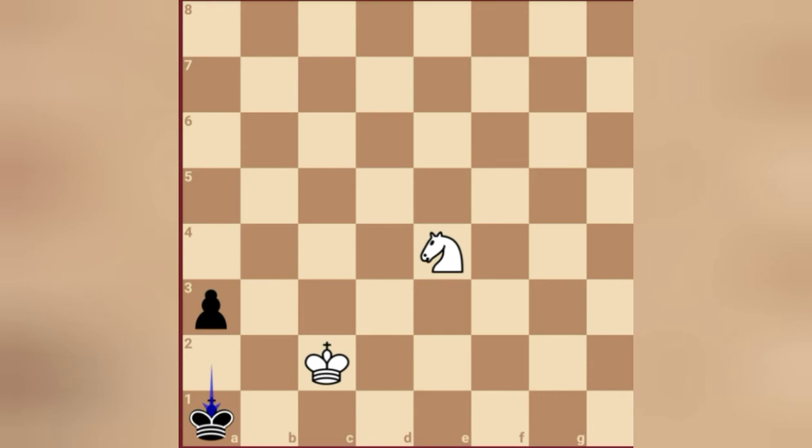In this position, it is important to play knight c5 to threaten the next move knight b3. For example, if you play knight c5, then a2, and then knight b3, it's checkmate.